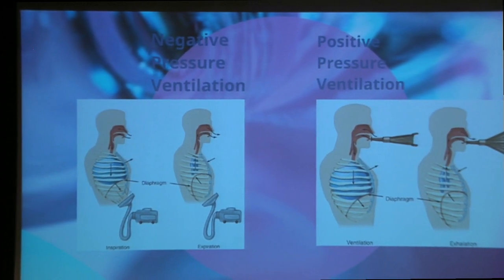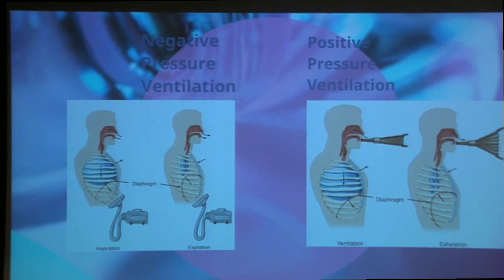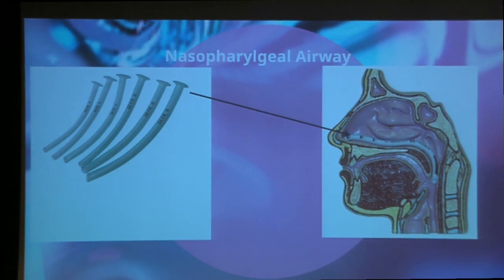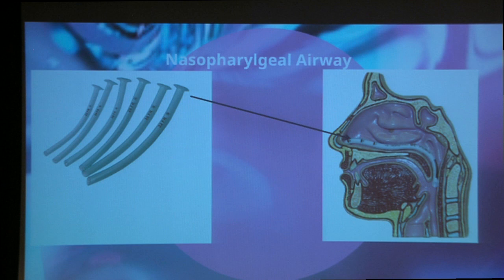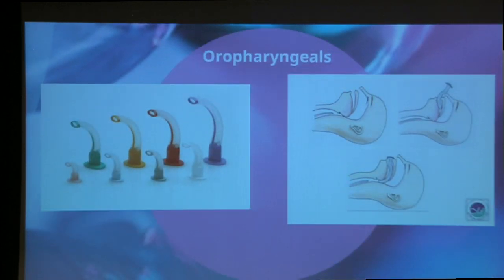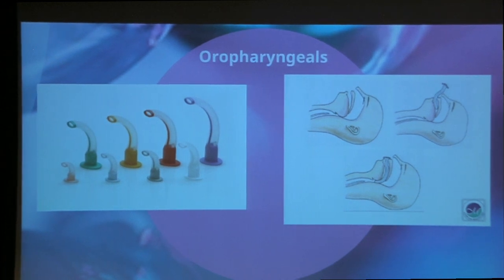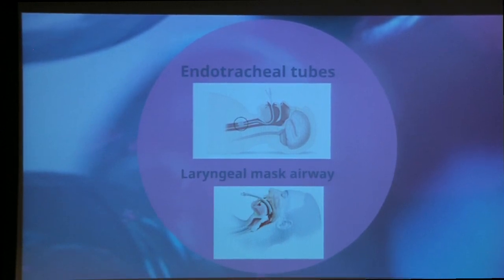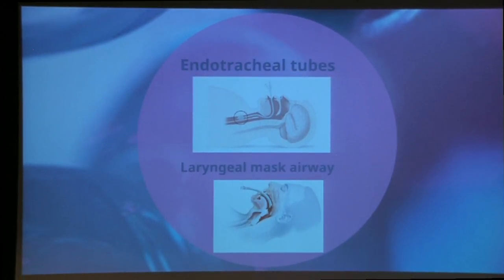For a quick procedure like a colonoscopy or a pediatric case, they sometimes use a mask rather than something more invasive. Bag-valve masks are used more in emergency situations where the airway can't remain open on its own. Typically what you see is an endotracheal tube or an LMA — laryngeal mask airway.